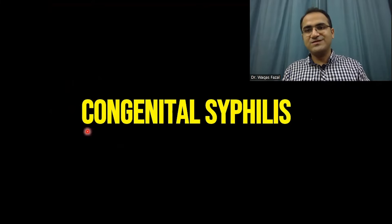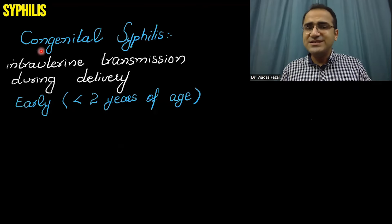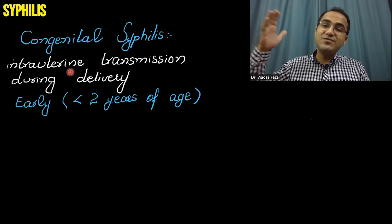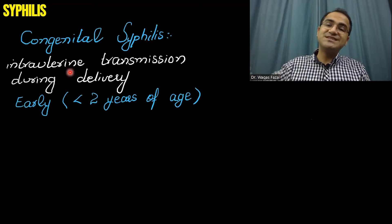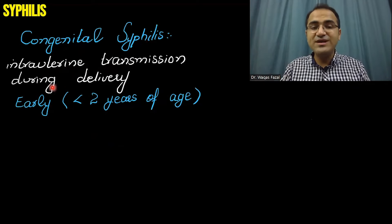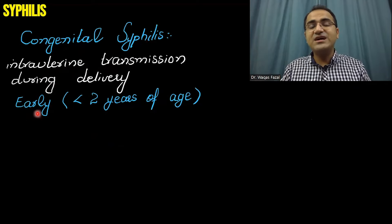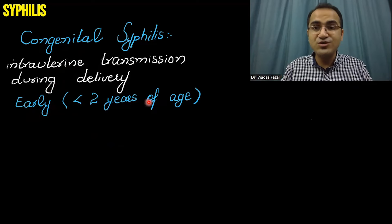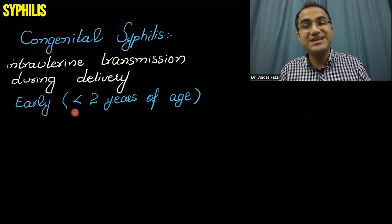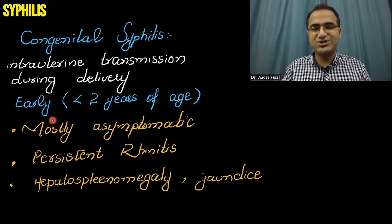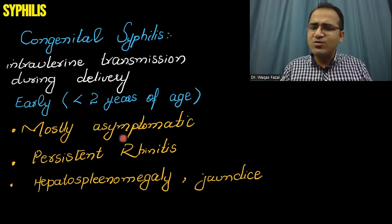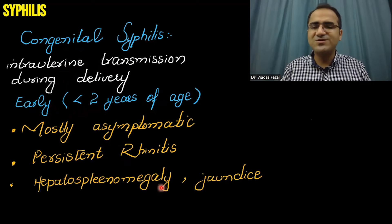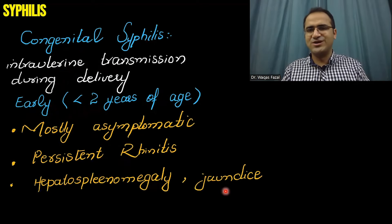Now, coming to congenital syphilis. In congenital syphilis, if the mother is infected, it can transmit syphilis to the infant via intrauterine transmission. It is called early congenital syphilis if the infant develops infection within less than two years of age. These infants are mostly asymptomatic but develop persistent rhinitis, hepatosplenomegaly, and jaundice.